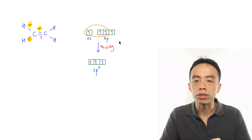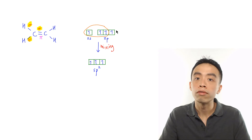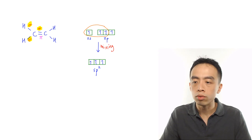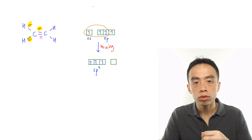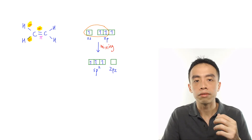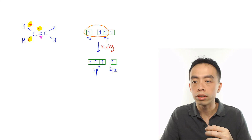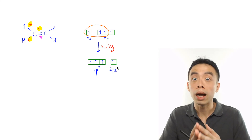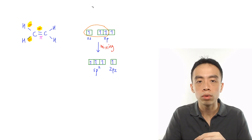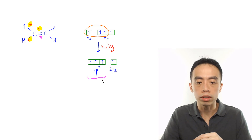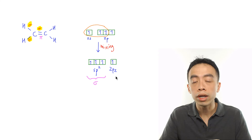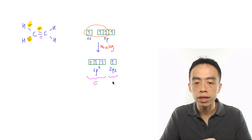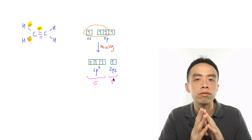Notice we have one remaining orbital — the 2pz orbital — which is not involved in hybridization. This 2pz orbital is unhybridized and carries one electron. It will be involved in pi bond formation. So the hybridized orbitals are involved in sigma bond formation, while the unhybridized 2pz orbital is involved in pi bond formation.